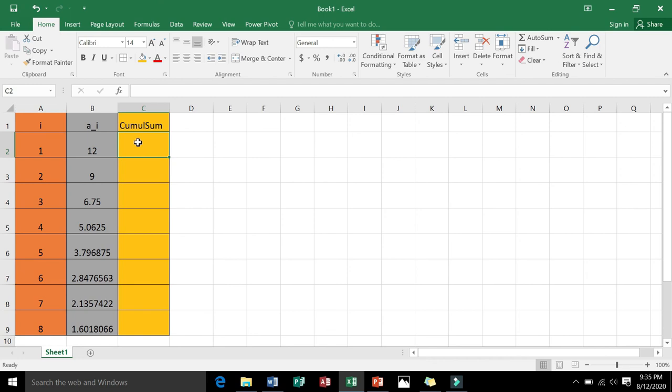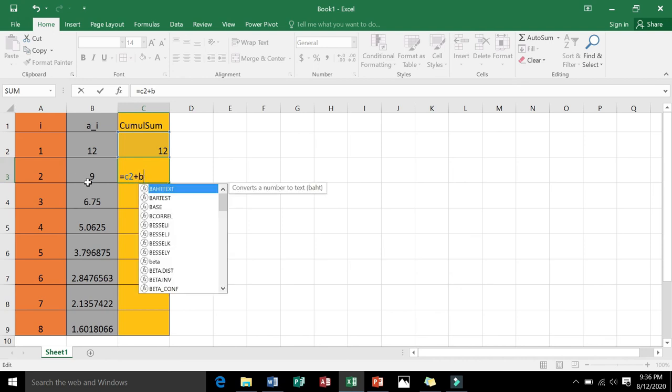So let us now compute for the cumulative sum. The cumulative sum will tell you the sum of the first consecutive n terms of the geometric sequence. So I will just write here 12, and then the cumulative sum, or the sum of the first n terms. So the sum of these first two terms is going to be C2, plus the second term. This is B3. Plus B3.